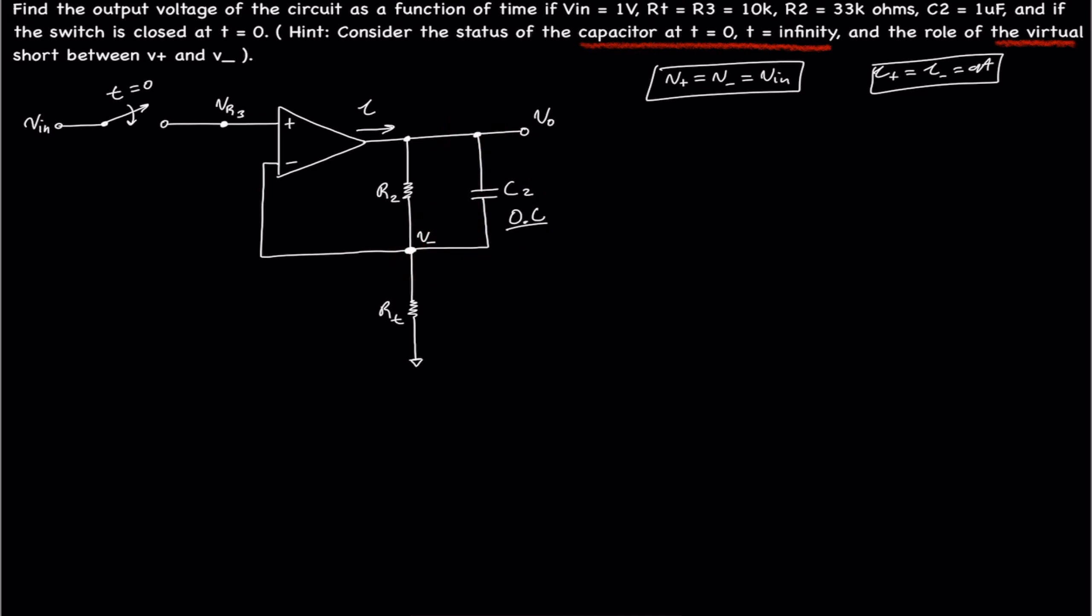So we go ahead and say when the cap is open, when there's an open circuit where the capacitor is, Vout is equal to 1 plus RT divided by R2 times Vin. We know Vin is 1 volt, so thus, Vout is equal to 4.3 volts.